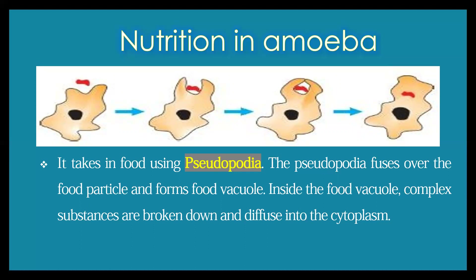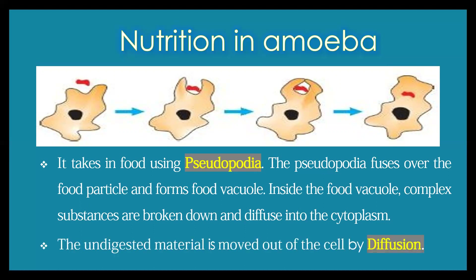Inside the food vacuole, the food particle is digested by enzymes. The converted simpler units then diffuse into the cytoplasm of the amoeba. The undigested food particles are then moved out of the body by the process called diffusion.